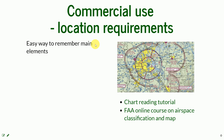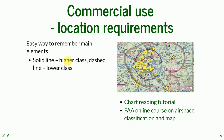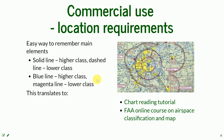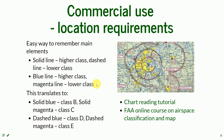The easy way to remember the layer cakes and what class they refer to is that a solid line always represents a higher class than a dashed line, and a blue line always represents a higher class than a magenta line. So this translates to: solid blue is Class B, solid magenta is Class C, dashed blue is Class D, and dashed magenta is Class E.